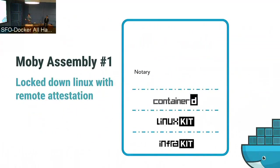Here's an example of what I mean by assembly of components. You have a locked-down Linux system. We use InfraKit to provision an OS based on LinuxKit, which Riaz will talk more about — it's a new open source component we open sourced at DockerCon that lets you assemble a custom OS. On top of that, we run ContainerD, and all these components, which are containers themselves, are verified through Notary, so you're sure that what you assembled comes from trusted components.